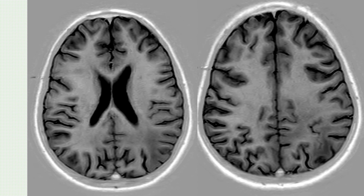T1 weighted inversion recovery is in the protocol for epilepsy, so this we have done. This is showing significant T1 hypointensity in the parietal lobes asymmetrically. The rest of the T1 findings are looking normal.